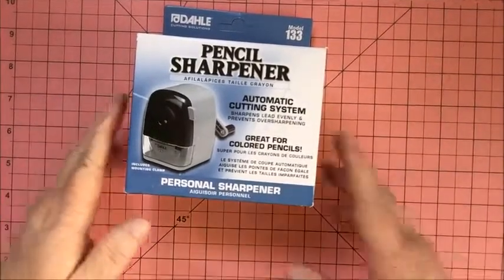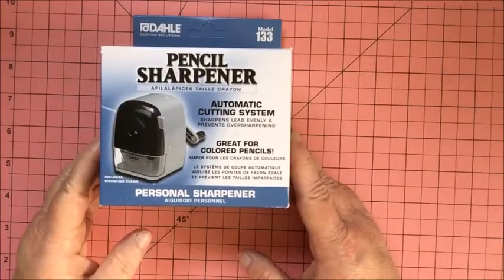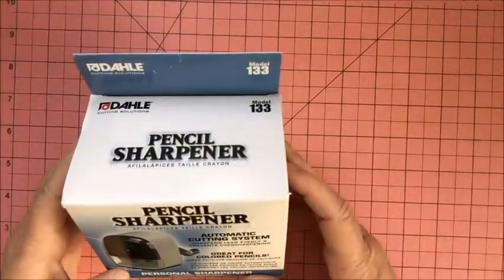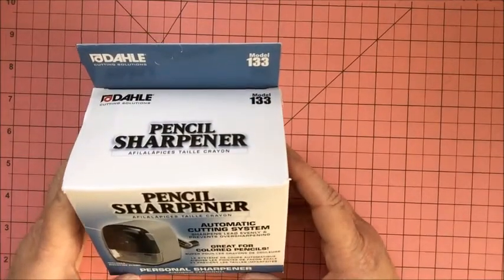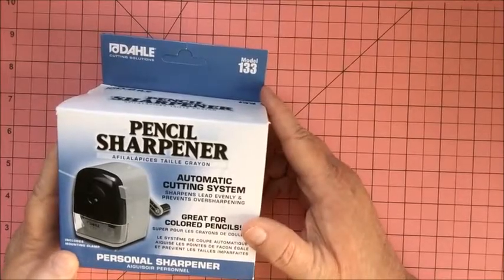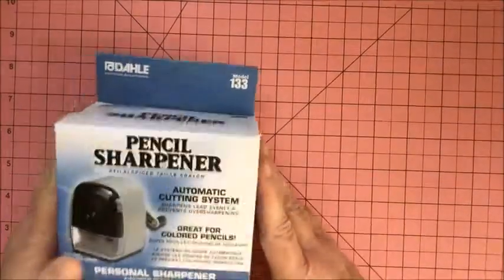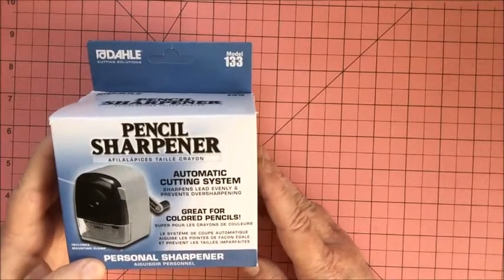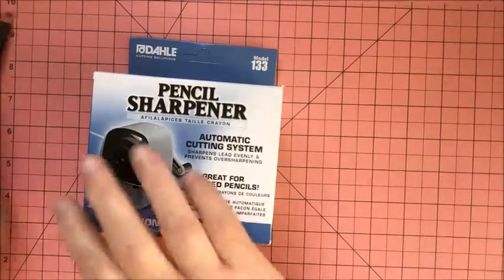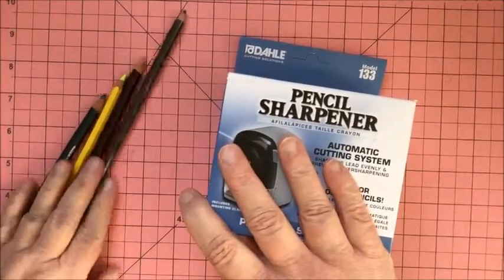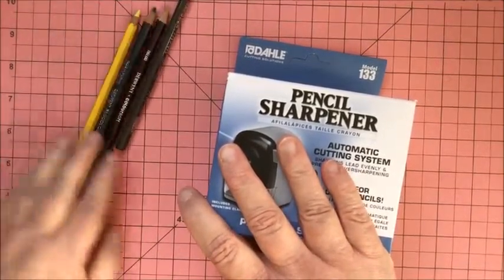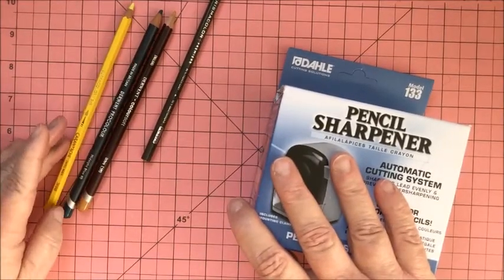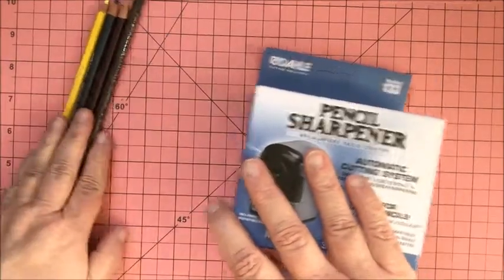Hey guys, I'm back with another video. I thought I would do the unboxing to this Dahl 133 pencil sharpener. I got it in the mail today. I ordered it a couple days ago. It does say that it's great for colored pencils and I do have a few pencils here to demonstrate. I have a couple Derwent - the Color Soft and the Pro Colors. I have a Caran d'Ache Super Color and I do have a Prismacolor.